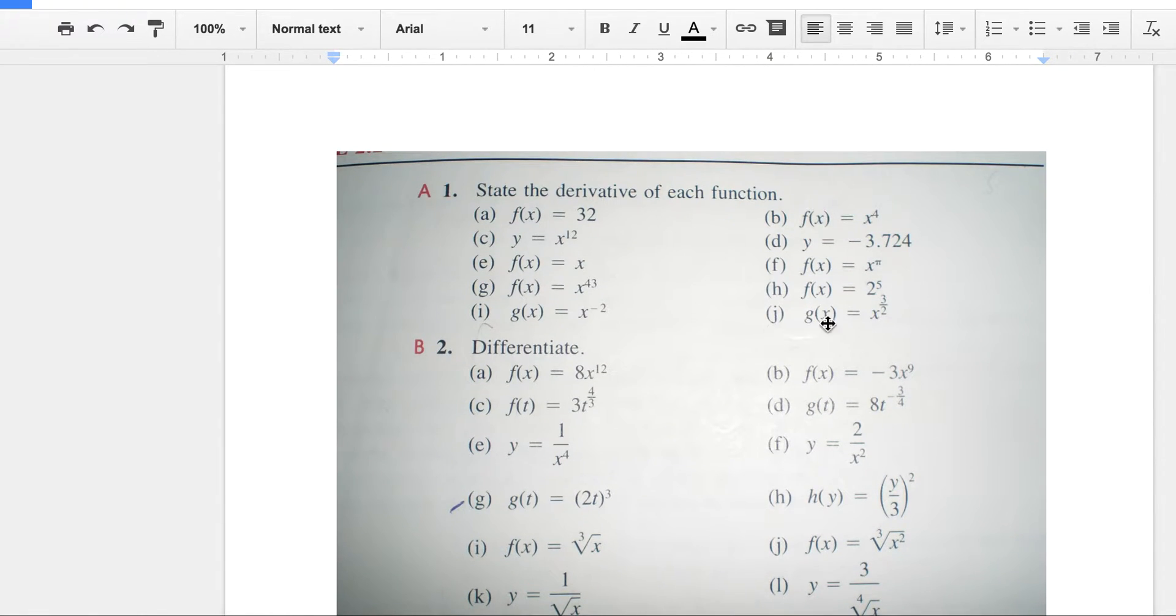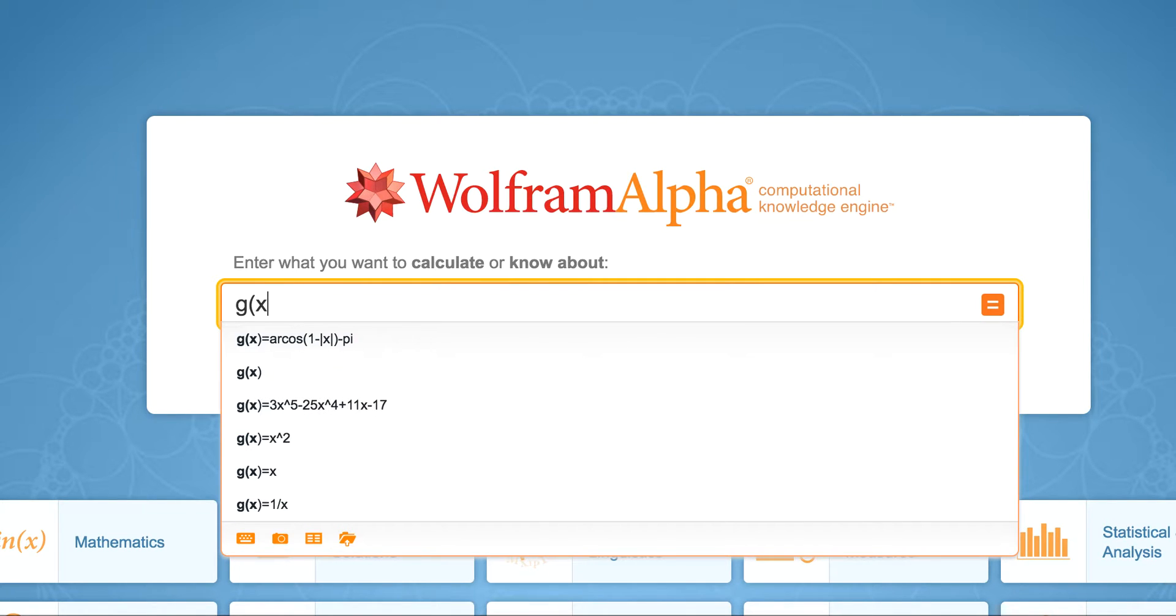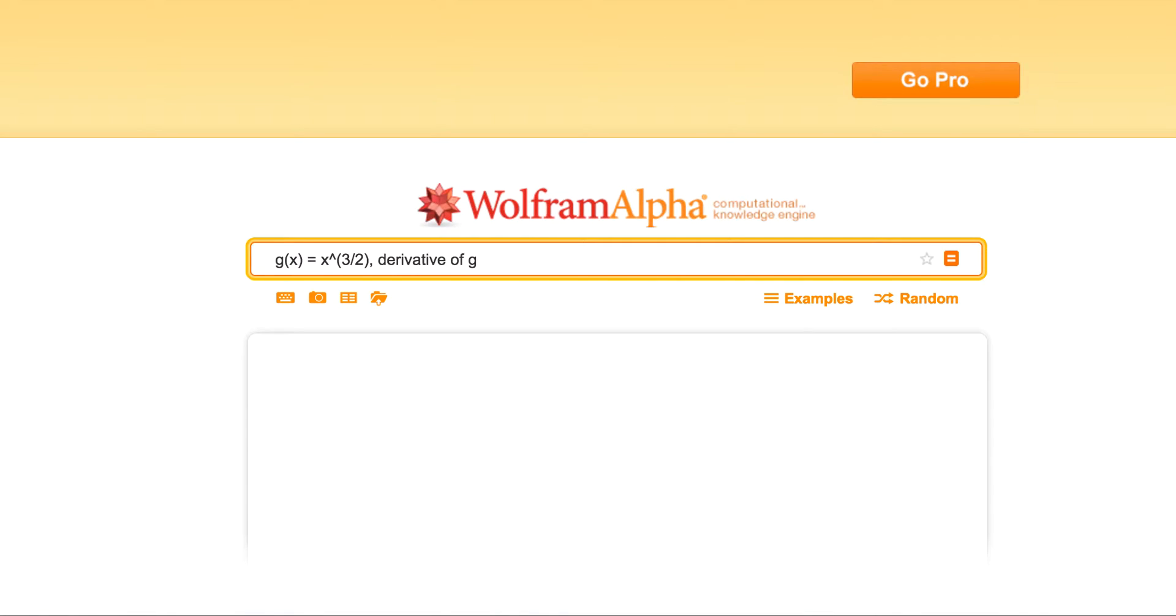Let's just pick one of these, like this one: g of x equals x to the 3 halves. Let's just write it out like they did: g of x equals x to the 3 halves, and then I'm going to say derivative of g. Let's see if that does it.